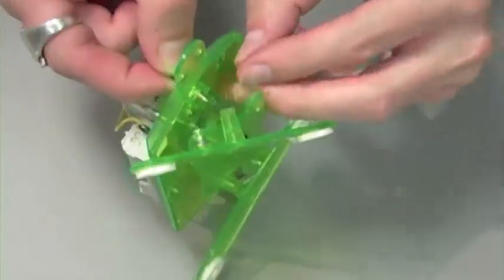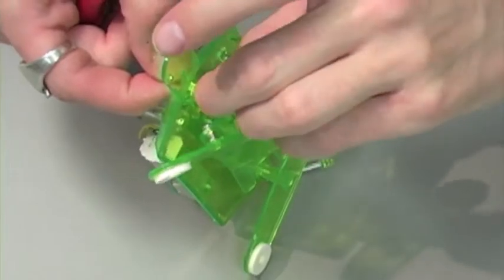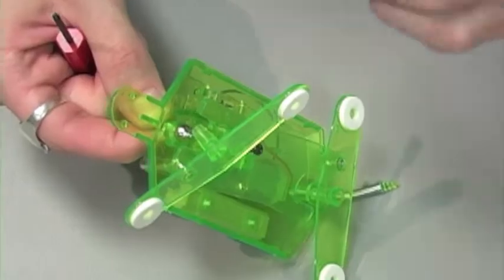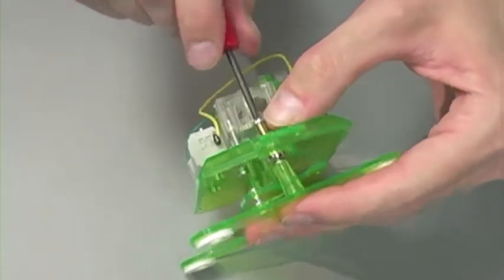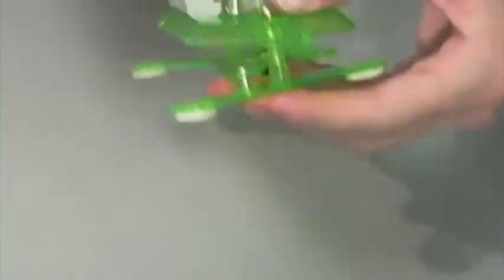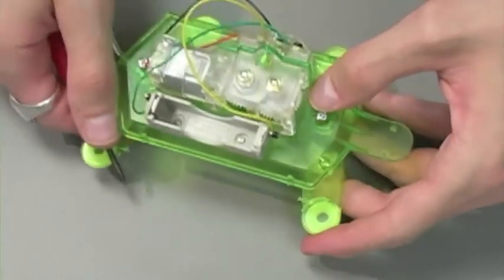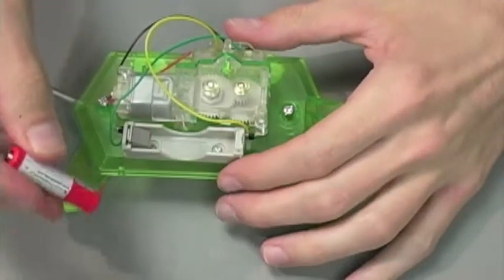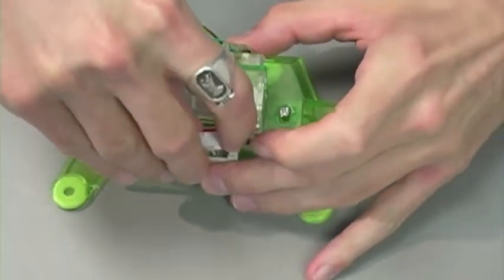Next, place your steel ball through the screw, followed by a washer, and now your robot is complete. The mechanical turtle requires one AAA battery.